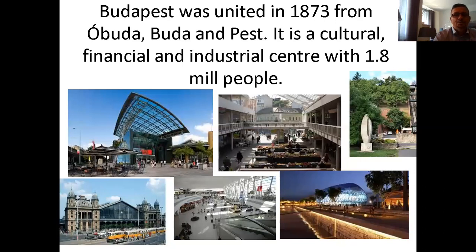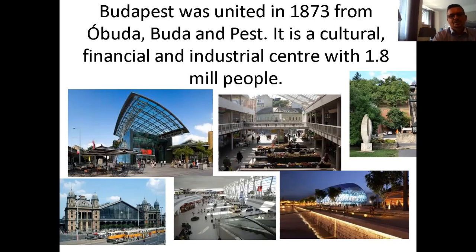Budapest was united in 1873 from Óbuda, Buda, and Pest — so it's quite old now. It is the cultural, financial and industrial centre with around 1.7–1.8 million people. Plenty of people try to move a bit further away from the city centre where there's less noise and pollution, so the neighbouring towns and villages are really popular — Solymár, Nagykovácsi, Budakeszi, Dunakeszi, and even Maglód and Szigetszentmiklós. All the regions around the city are popular because people can have bigger gardens with less noise and less pollution. Please try to identify the different places in Budapest on the map.